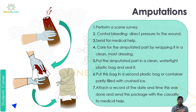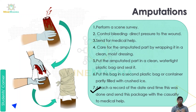The sixth point is to place that sealed bag into another container, and then attach a record of the date and time this was done. This package with the amputated body part should be sent along with the casualty to medical help. That is our first aid for amputation.